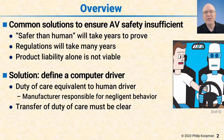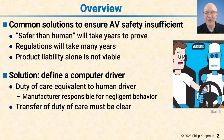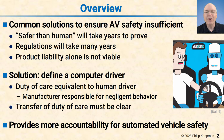This duty of care has to transfer back and forth between the driver and the machine, and it has to be crystal clear how that transfer happens. It's unfair to stick the human driver with the duty of care when they really aren't capable of ensuring safety. But it's also unfair to stick the manufacturer with the duty of care when the driver legitimately should be in charge. The idea is to provide more accountability for automated vehicle safety by making the rules of engagement — who's responsible for safety and when — absolutely clear.